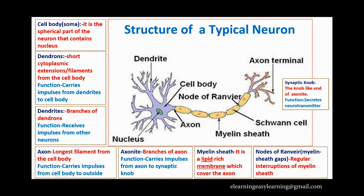Next is the myelin sheath. Look at this neuron — you can see that the axon has a covering. The dendron, dendrites, and cell body are not covered, but the axon is covered with a particular material called the myelin sheath, which is a lipid-rich membrane. If you look closely, you can see that the axon is not completely covered — there are interruptions or non-myelinated areas. These non-myelinated areas are known as nodes of Ranvier, or myelin sheath gaps.